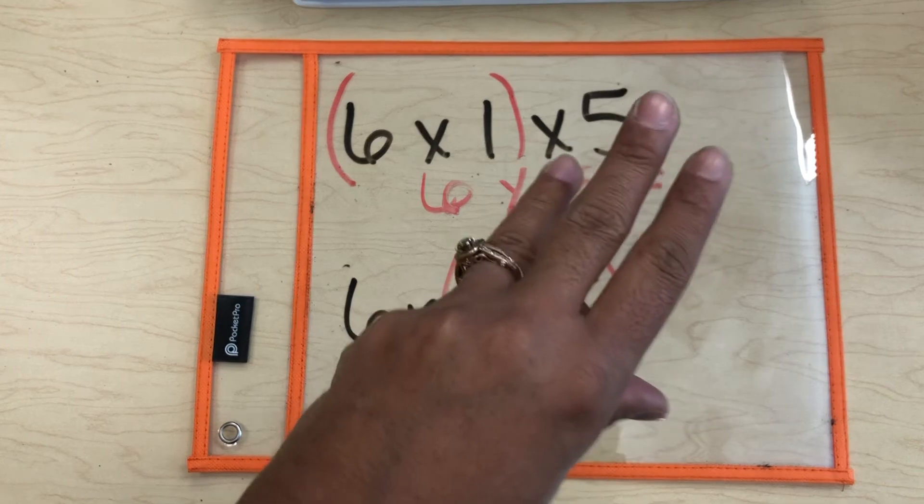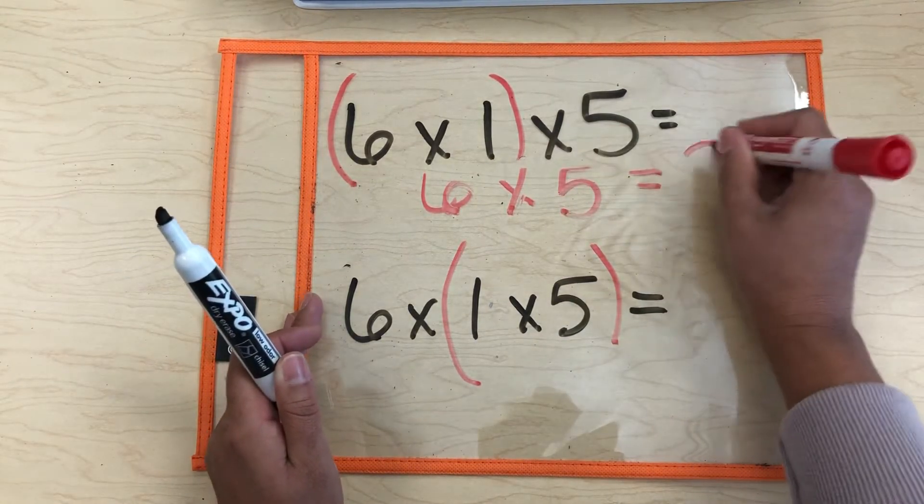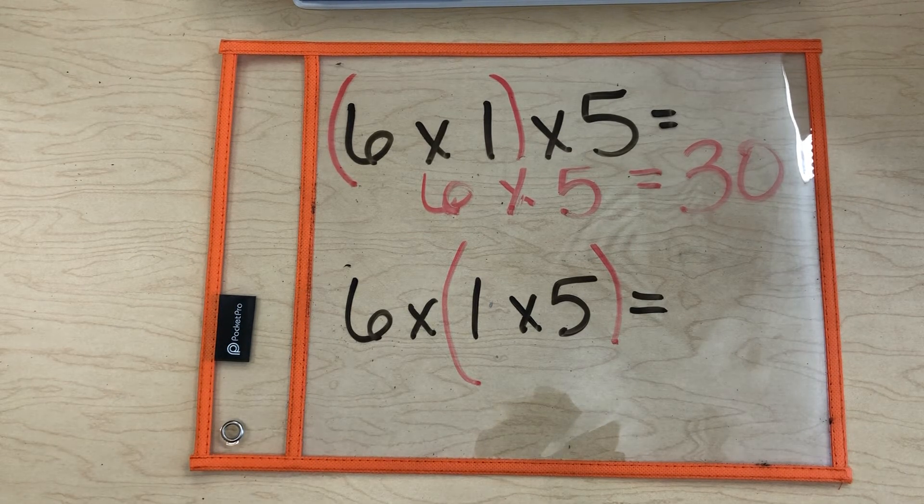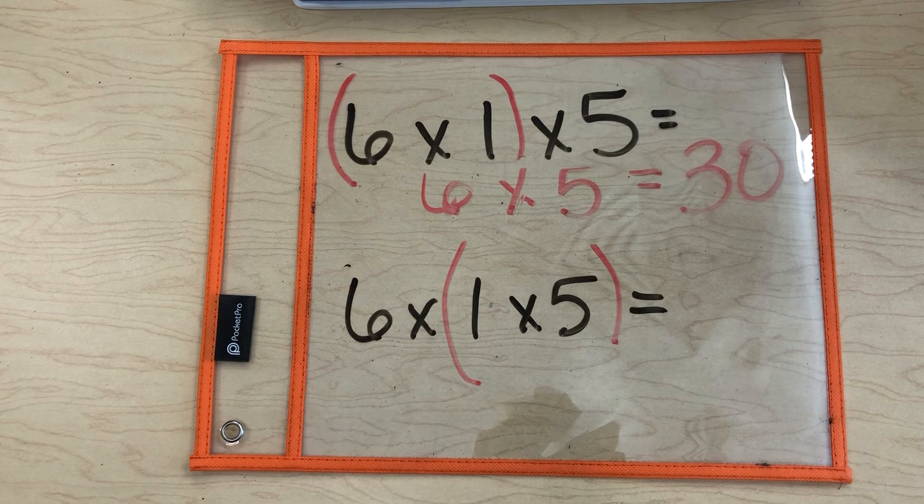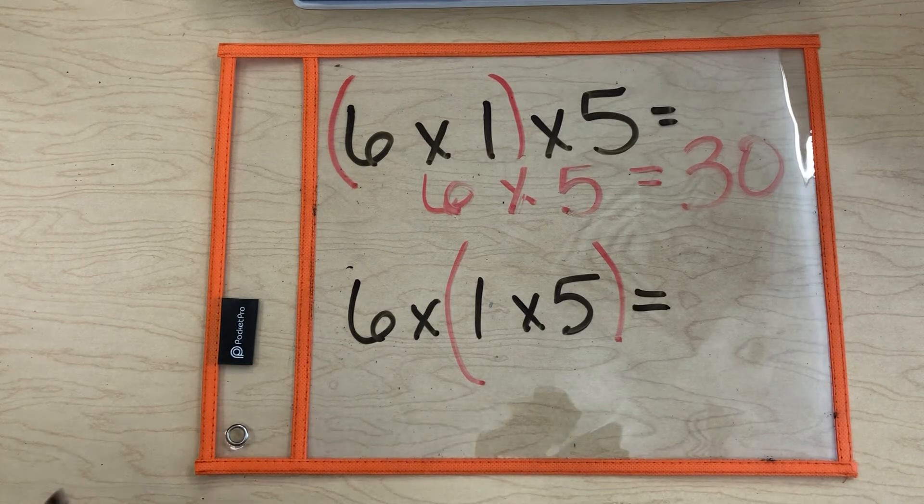6, 12, 18, 24, 30. Awesome. 6 times 5 is 30. Okay. So in order for us to have used the associative property of multiplication correctly, we must get the same product of 30 down here. Let's check it out.